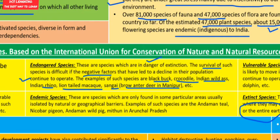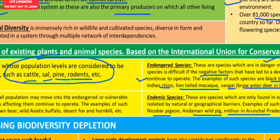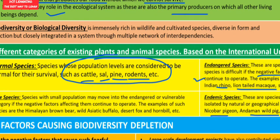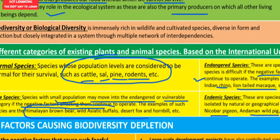Endemic species are those found only in some particular areas, usually isolated by natural or geographical barriers. Examples include the Andaman teal, Nicobar pigeon, Andaman wild pig, and Mithun in Arunachal Pradesh. Rare species have small populations that may move into the endangered or vulnerable category if negative factors continue. Examples are the Himalayan brown bear, wild Asiatic buffalo, desert fox and hornbill.